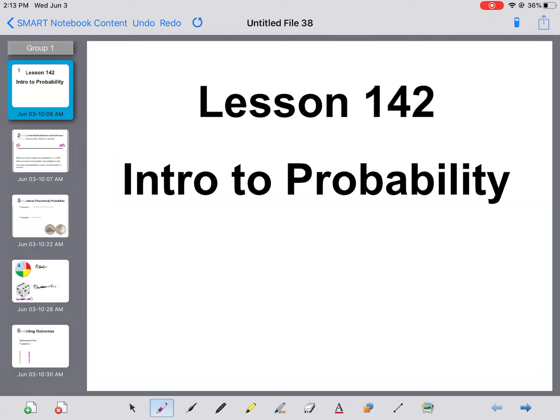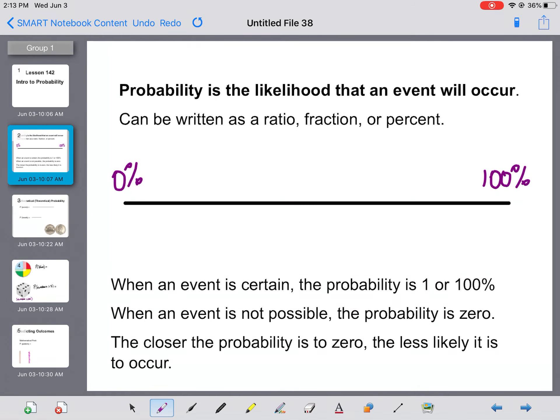Lesson 142, intro to probability. So a new unit for us today and we're going to be talking about probability. First, we should define that word. Probability is the likelihood that an event will occur, the likelihood of something happening to put it in a simpler term. And probability can be written as a ratio, a fraction, or a percent, so those are all things that we have dealt with before in math this year.